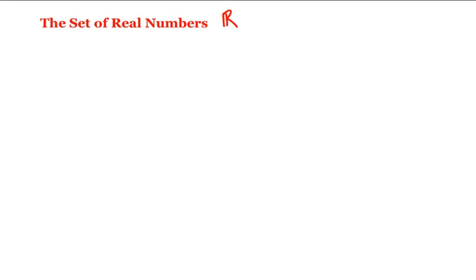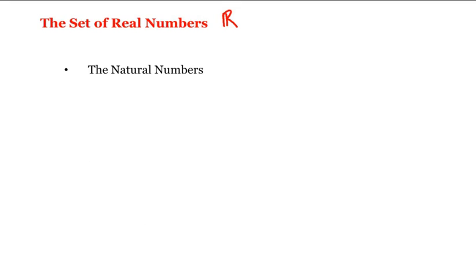Now there are different subsets of real numbers. The first subset to consider are what we call the natural numbers. These are just the counting numbers that we're used to: 1, 2, 3, 4, and so on. We represent the set of natural numbers by a capital N. That is, N is equal to {1, 2, 3, 4, ...}.